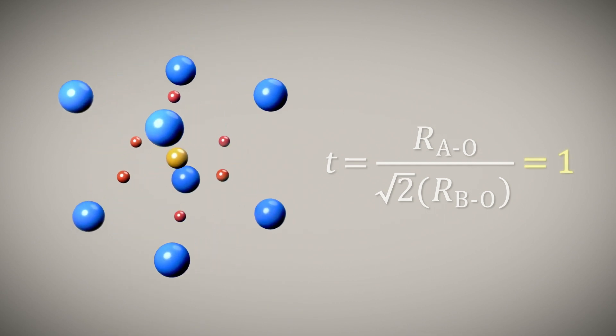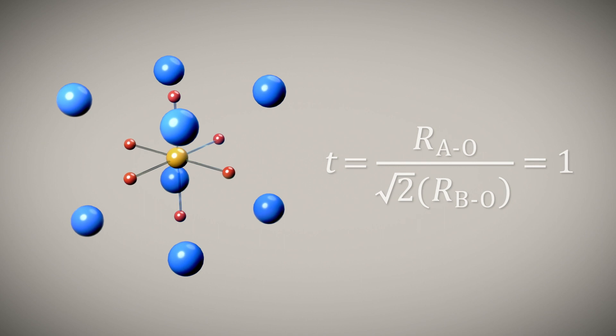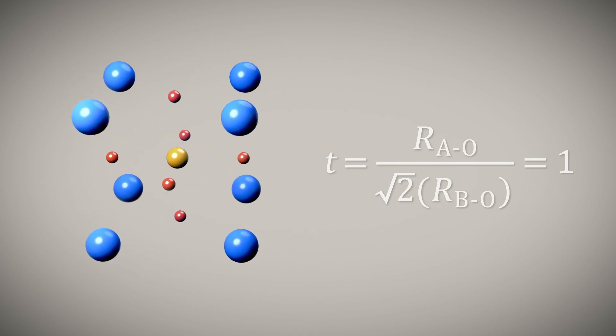When T equals 1, the A and B site cations are ideally coordinated, and the cubic structure is predicted to be stable.